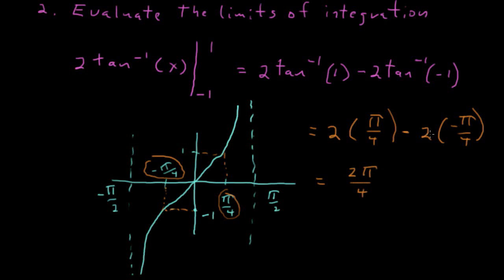And then it's just a matter of simplifying that. Let's see, we'll have 2 pi over 4, and minus a negative will be plus another 2 pi over 4. Add those two together, you get 4 pi over 4, or pi. And so the answer to this problem is pi.